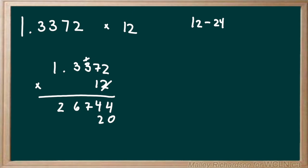1 times 2 is 2. 1 times 7 is 7. 1 times 3 is 3. 1 times 3 again is 3. And then 1 times 1 is 1. So now that we have all these numbers on the bottom we can add them together to get our final answer without the decimal.